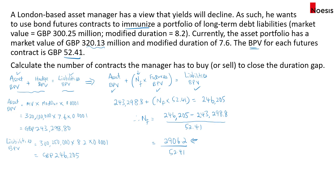Closing the gap means there will be no difference between the asset and liability BPVs. Dividing 2,906.2 by 52.41 gives us 55.45 contracts. Since you can't buy 0.45 of a contract, we round to the nearest whole number — 55 futures contracts. Since this is a positive number, we will long 55 contracts. A negative result would indicate a short position.